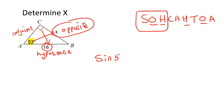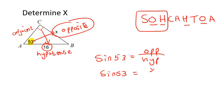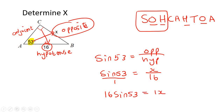So you say sin of the angle, 53, equals to the opposite over the hypotenuse. That's x over 16. Then use cross multiplication — you end up with 16 sin 53 equals to 1 times x. If you type in 16 sin 53 on your calculator, you're going to end up with x as 12.78.